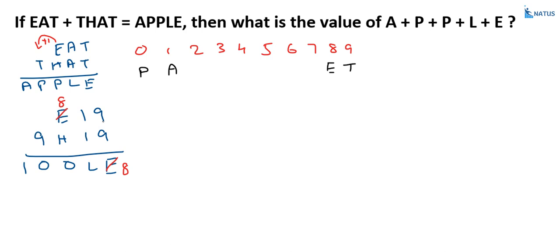Now, come to this part. 9 plus 9 is equal to 18, so there is 1 carry over here. Now, 1 plus 1 plus 1 is equal to 3. So, the value of L is equal to 3. So, 3 is allocated to L.